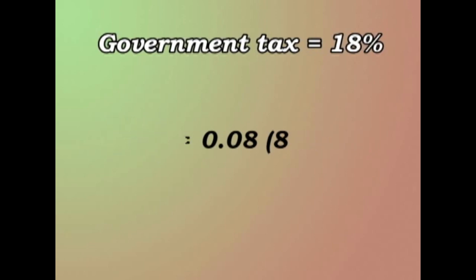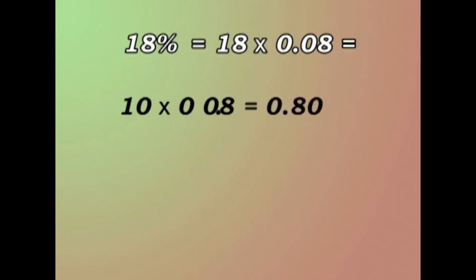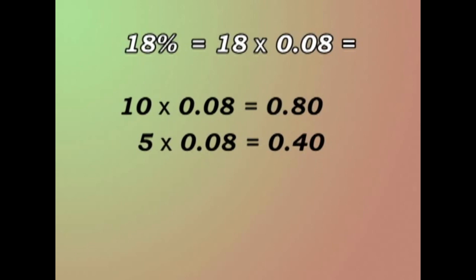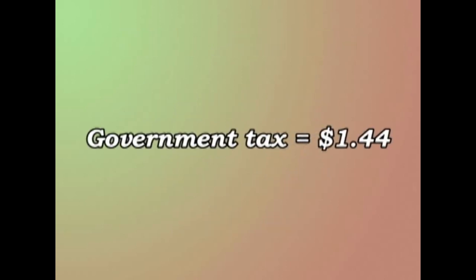That's just 1%, so 1% of $8.00 is $0.08. But the government tax is 18%, so we multiply 18 times 0.08. Let's do it in the usual way: 10 times 0.08 — multiplied by 10, you move the decimal point one place to the right — gives 0.80. 5 is half of that, so 0.40. And 3 times 0.08: 3 times 8 is 24, so 0.24. Adding 80, 40, and 24 cents together, we get $1.44. So the government sales tax is $1.44.